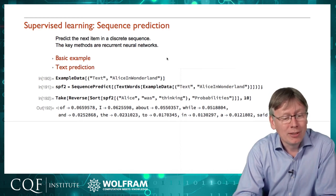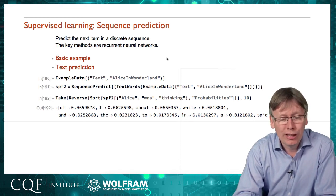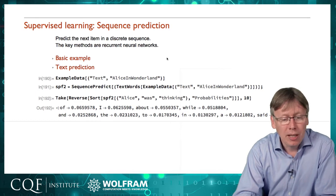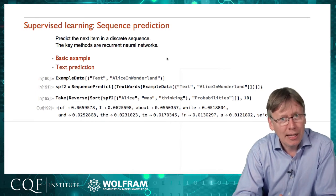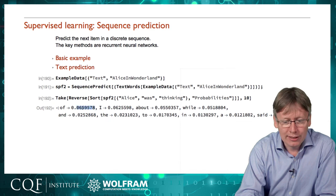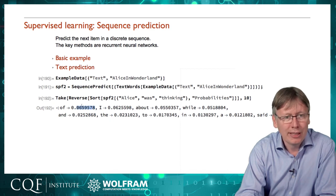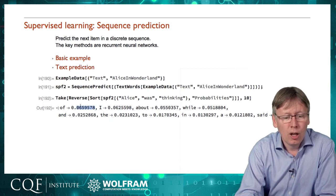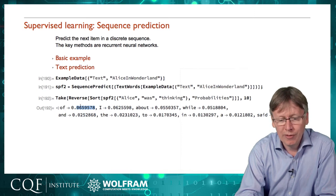Here are the predictions of what word comes next, and hopefully those make sense. We've got 'Alice was thinking of' — that seems like a perfectly reasonable prediction. 'Alice was thinking I' — yeah, maybe. 'Alice was thinking about' — definitely seems like a good one. The numbers on the right-hand side are the probabilities, so there's about a 6% chance that 'of' was going to be the next word based on previous experience.